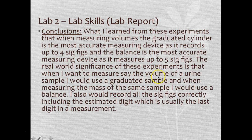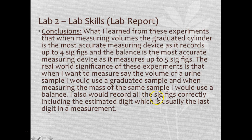For real-world significance: if you need to measure the volume of a urine sample and don't have a pipette or burette, use a graduated cylinder. For measuring the mass of that same sample, use the top-loader balance. Always record all digits, even zeros — all visible digits are significant. That last digit in any measurement, whether volume or mass, is called the estimated digit.